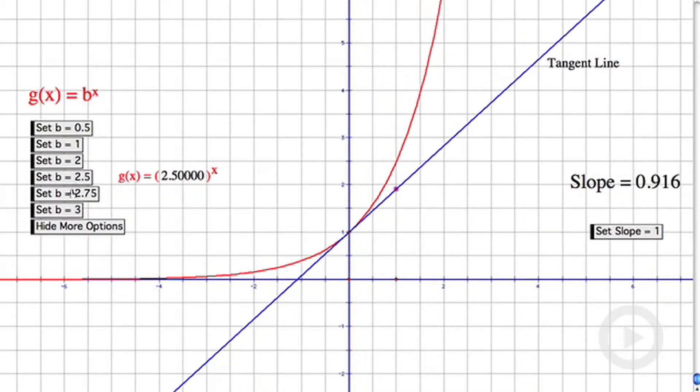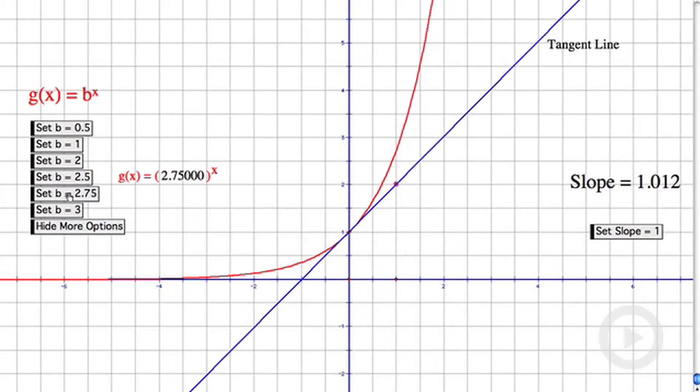Is it 2.5? No. 2.75? No. It turns out that if I want to get the slope to be exactly 1, I need b to be 2.71828. It's this number e.